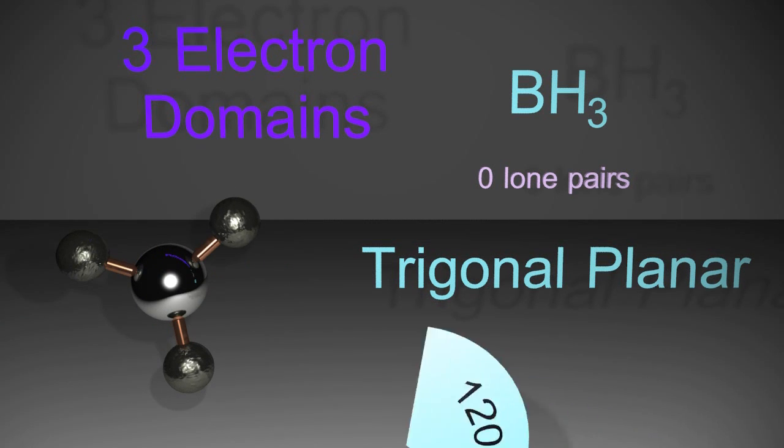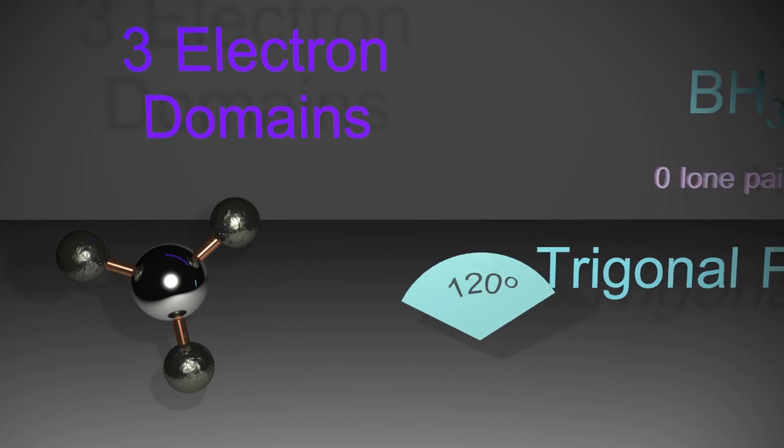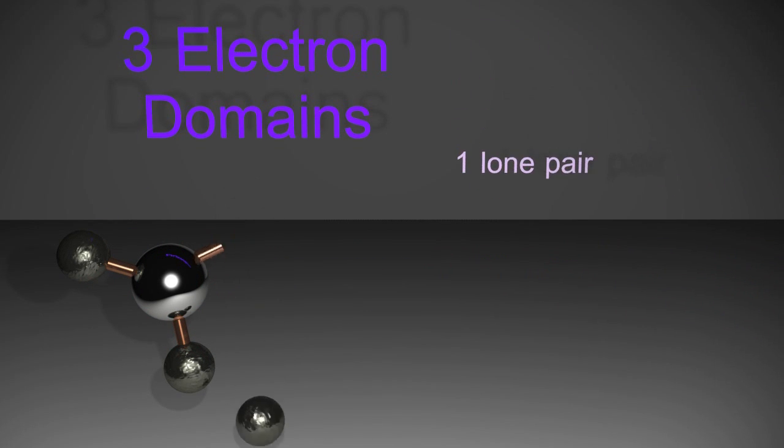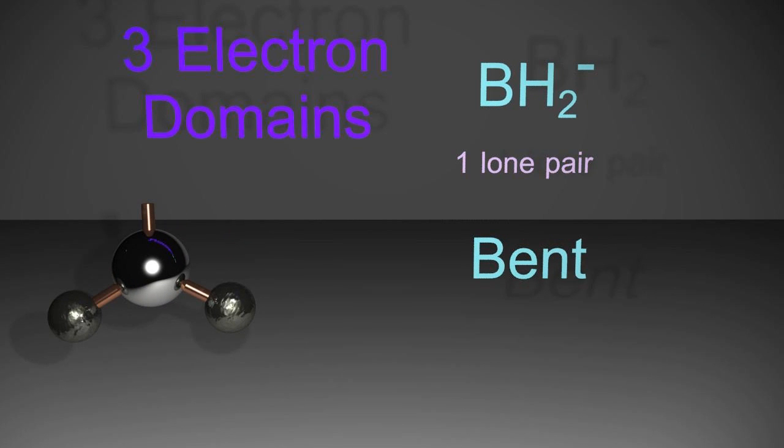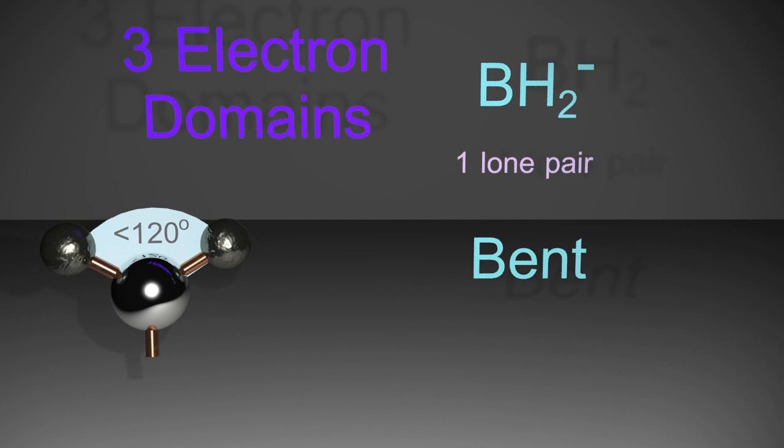Since it's an equilateral triangle, the bond angles are 120 degrees all around. But if I remove an atom, leaving one lone pair, which is now extra repulsive, the bond angle is going to be reduced to just below 120 degrees.